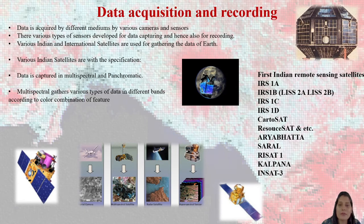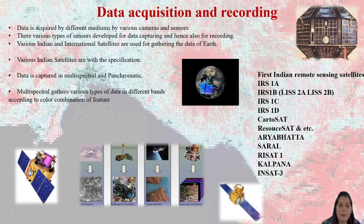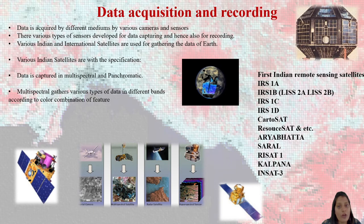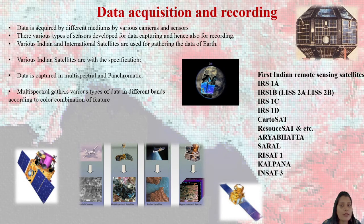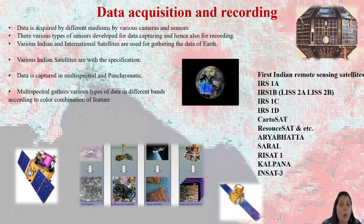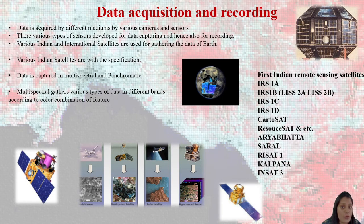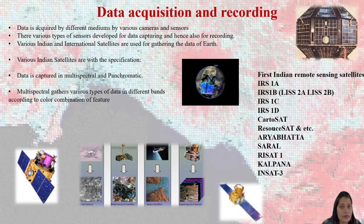Various Indian remote sensing satellites have been developed, including IRS-1A, 1B, 1C, ResourceSat, SARAL, RISAT, Kalpana, and INSAT. These satellites were developed by Indian scientists to capture images of Earth and all the features on the earth's surface, because success in capturing earth's features was the foundation for going further.